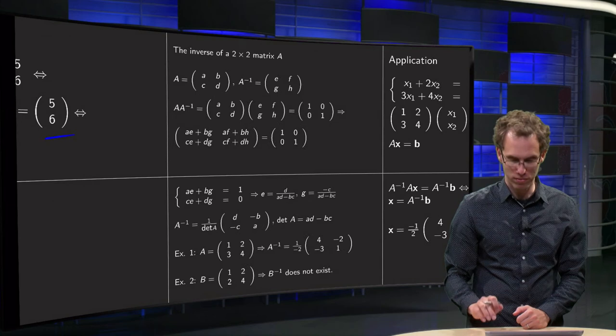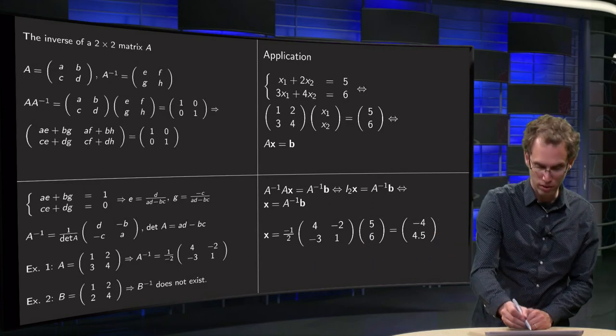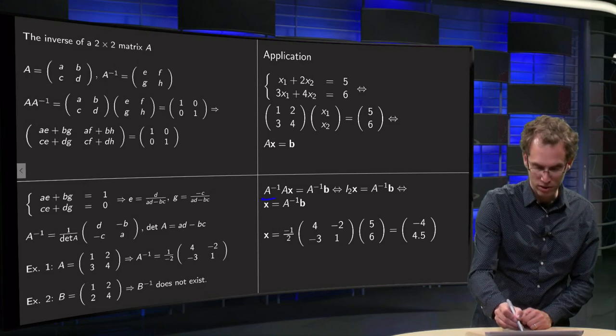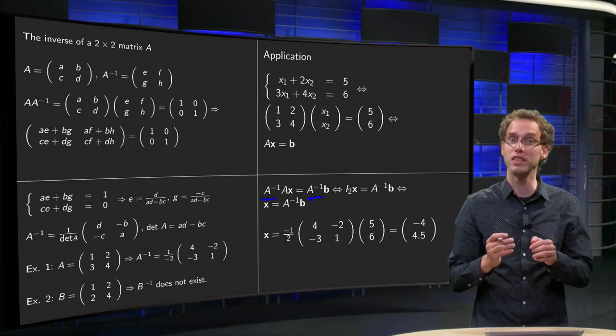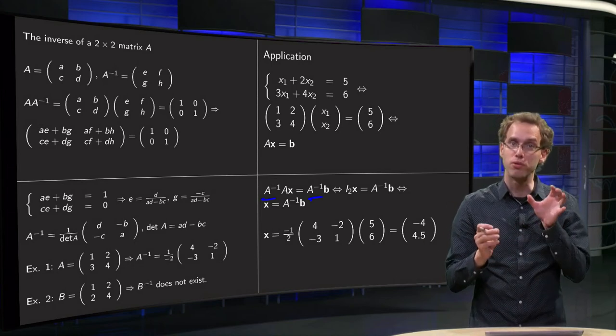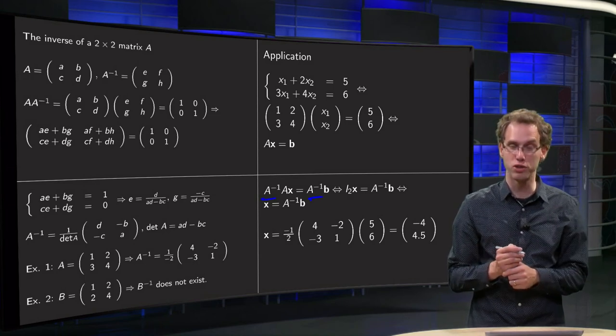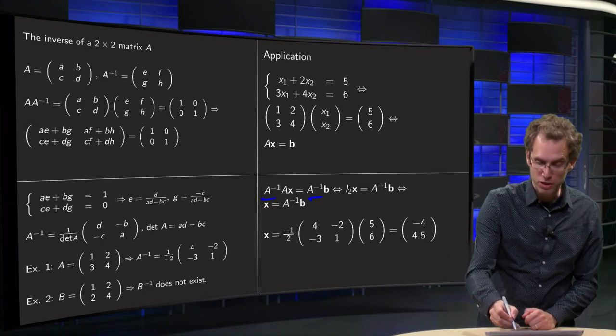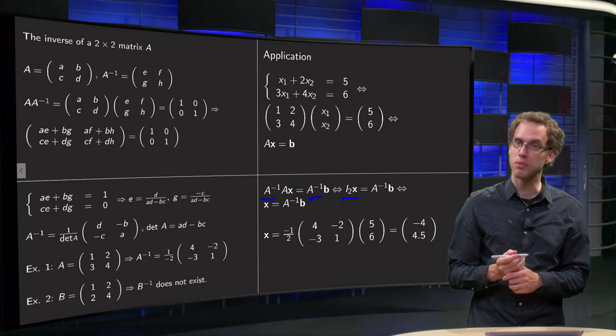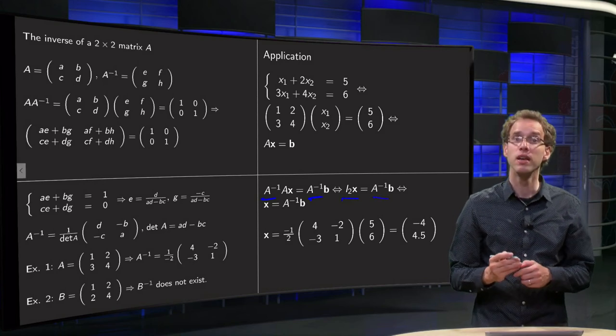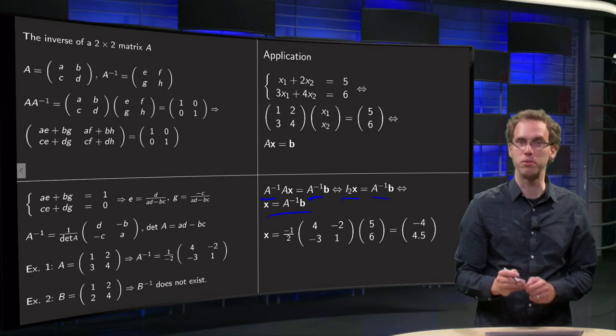And now we can use this inverse, because we can multiply our equation x equals b on the left. Always be aware, you have to multiply on the same side of an equation, if you do matrix multiplication, because it does not commute. We multiply on the left by A inverse, and we get A inverse times A times x equals A inverse times b. Well, A inverse times A equals the identity matrix, so we get identity matrix times x equals A inverse times b. But identity matrix times x is just x, so x equals A inverse times b.